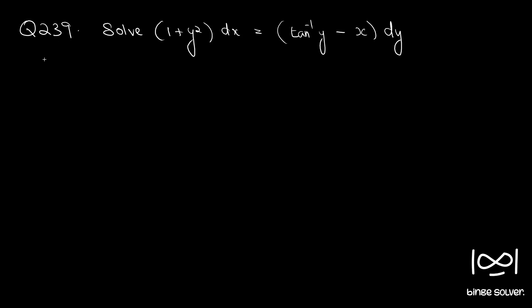Solve: (1 + y²)dx = (tan⁻¹y - x)dy. If you observe, there is only one x term here; all other terms are in y. So we rearrange this into dx/dy = tan⁻¹y / (1 + y²) minus x / (1 + y²).